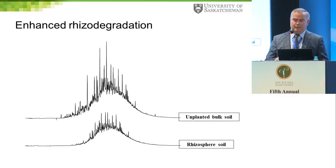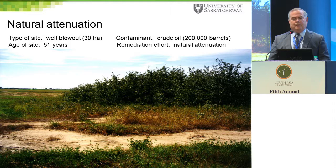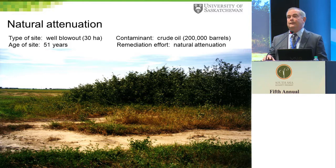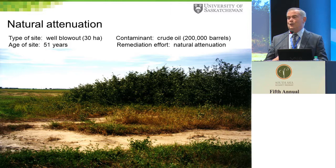Rhizofiltration is where the root system acts like a sponge or filter, removing chemicals before they leach into groundwater. This is an example of enhanced rhizodegradation: if you add a petroleum compound to soil and it is unplanted you see one profile, but if you have a plant growing there the chemicals are readily degraded. This particular oil well blew out about 61 years ago, and initially nothing was done, but after a period of time plants slowly worked their way back into the ecosystem, remediating and degrading the petroleum hydrocarbons — this is natural attenuation.